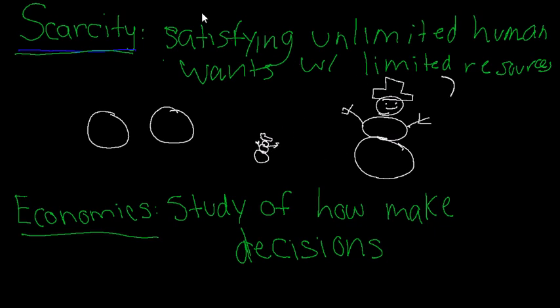Scarcity is satisfying our unlimited human wants with limited resources. This applies to a lot more than snowballs and snowmen — it comes from money, natural resources like trees, lumber, paper, oil. Our human wants are to have as many resources as possible: we want to build structures, power our cars and houses, etc. But the reality is that we just don't have enough resources to satisfy all the wants in the world. We have a lot of food in the world naturally, but we still have people that are hungry or starving because we have a food crisis — because we have limited resources to devote to food.